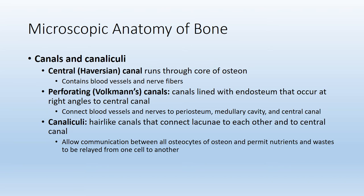Looking at the osteon in greater detail, we have many canals and canaliculi. All of these provide openings for blood vessels, nerve fibers, and communication between different structures of bone tissue. The first canal you have to know is the central or Haversian canal, which runs right down the center of the osteon and carries blood vessels and nerve fibers. An osteon will also have perforating or Volkmann's canals running at right angles to the central canal, allowing neighboring structures — osteons, the medullary cavity, and the periosteum — to communicate with each other.